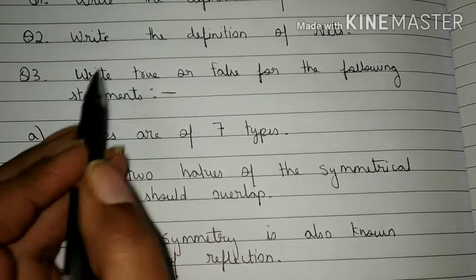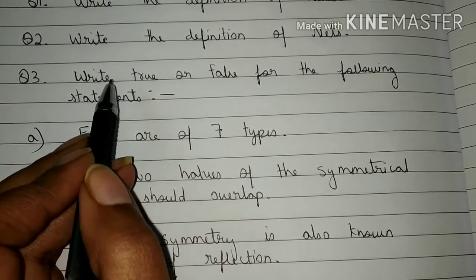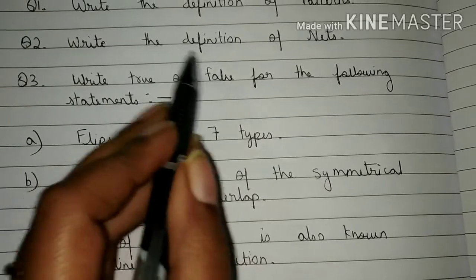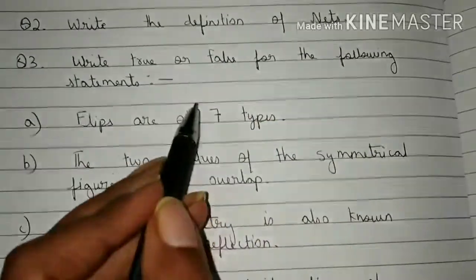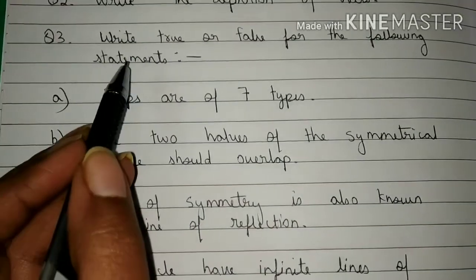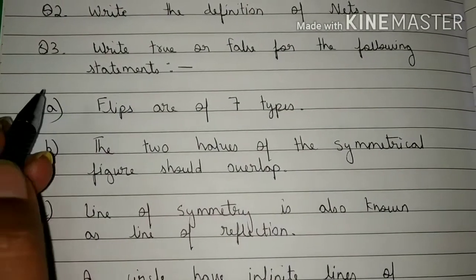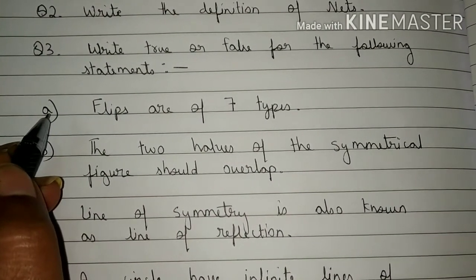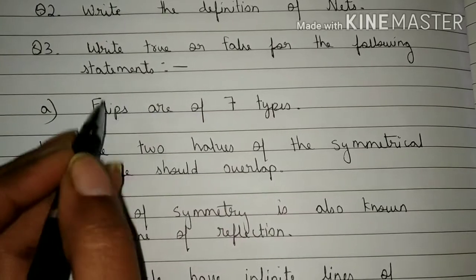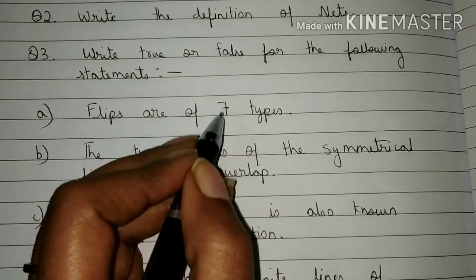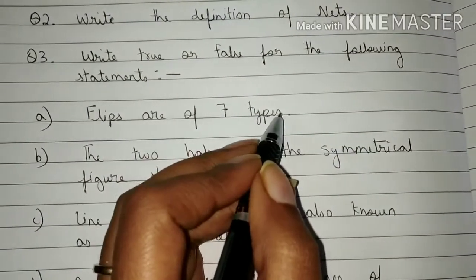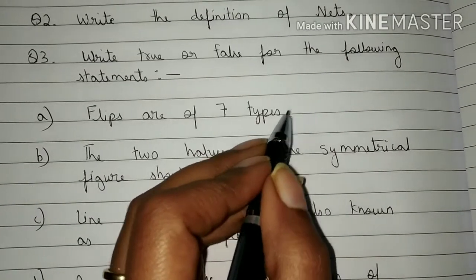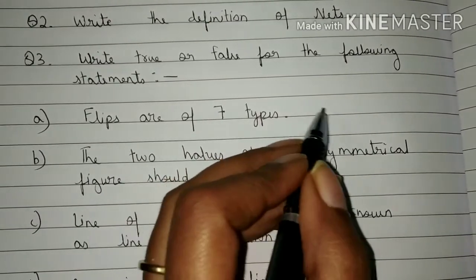Now come to Question Number Three: Write true or false for the following statements. In this question you are going to write true or false. Part A — the statement is: Flips are of 7 types. Is this statement true or false? You are going to write your answer here.